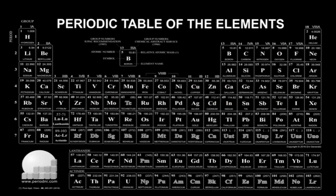Now on our periodic table, we can look at it two ways. We can look at it as a table of elements where each element is listed according to the number of protons it has and generally according to increasing atomic mass, or we can look at it as a table that states where all the electrons should be placed in an atom.